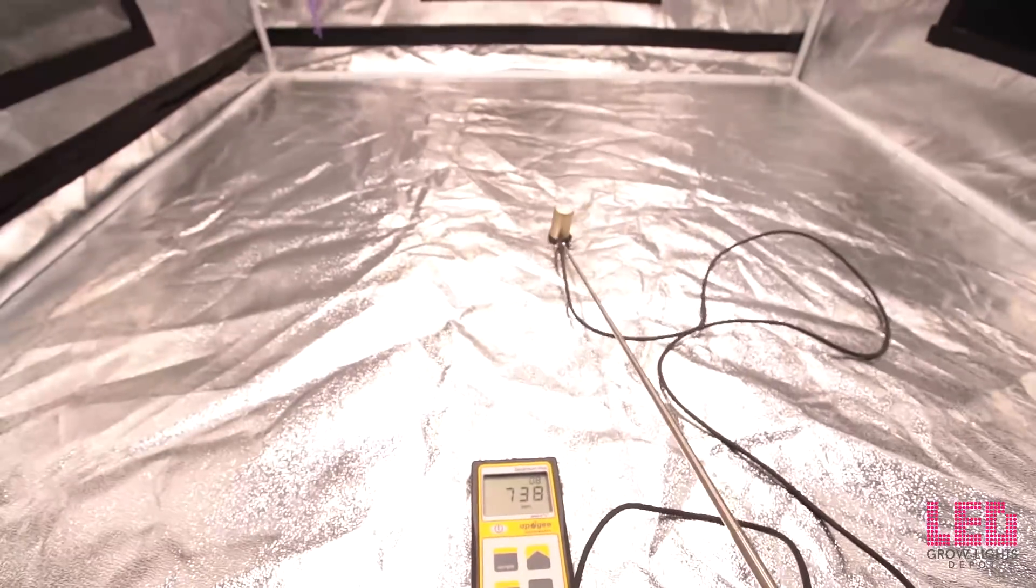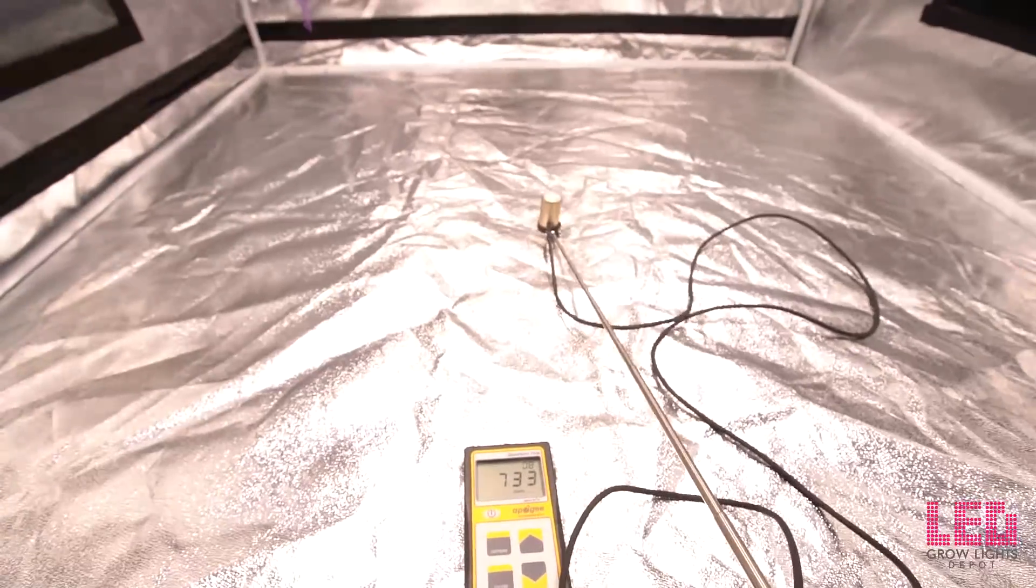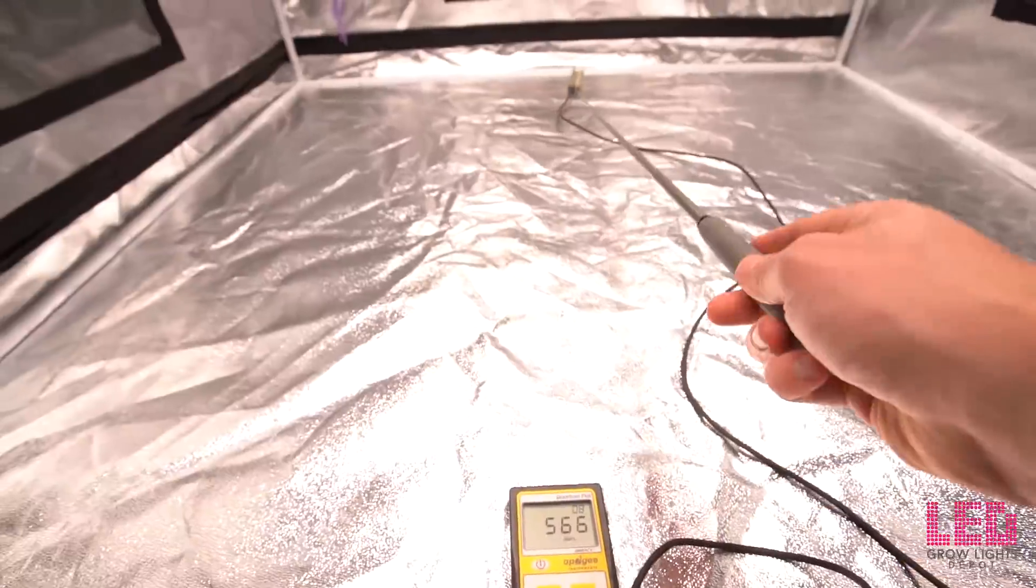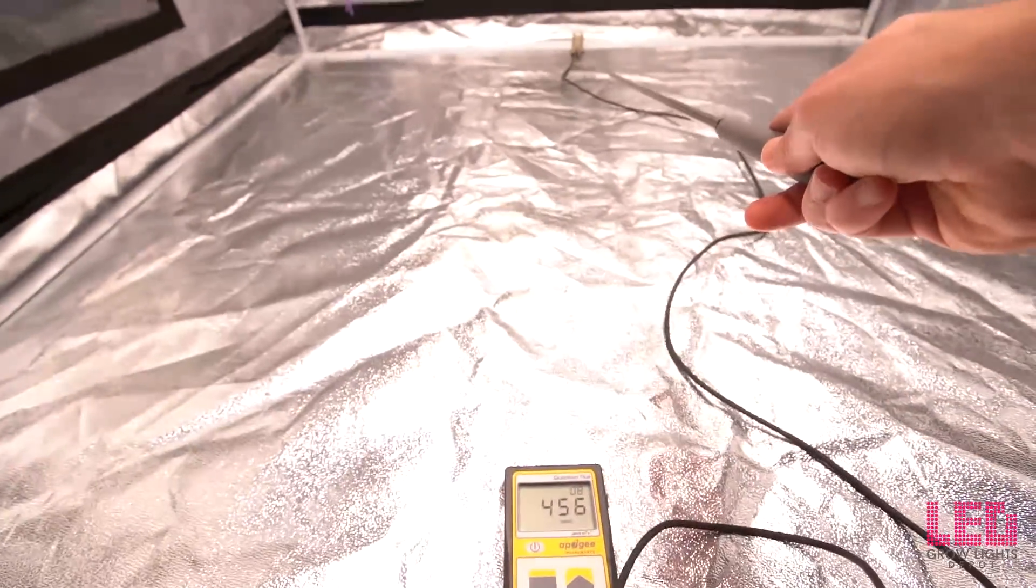Now we're going to do a quick check at three feet. At three feet you're going to get lower PPFD in the center but higher PPFD in the edges and in the corners, just because the light is a little bit higher so you get better uniformity.